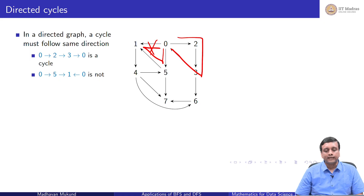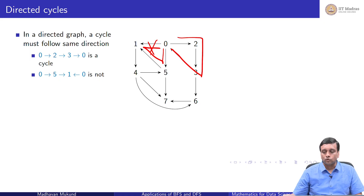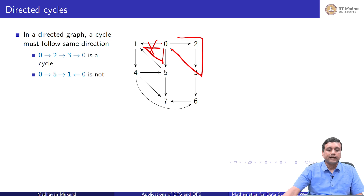If I ignore the direction, there is a cycle 0, 5, 1, 0, but with directions there is no such cycle. So we are interested in directed cycles.